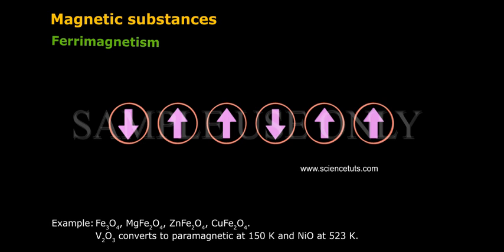ZnFe2O4, CuFe2O4. V2O3 converts to paramagnetic at 150 Kelvin and NiO at 523 Kelvin.